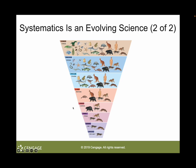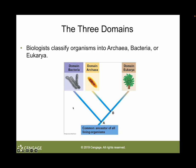Carl Woese of the University of Illinois and his colleagues began to study evolutionary relationships among organisms by analyzing genes coding for ribosomal RNA using sequence analysis. He used the variations in this universal molecule to challenge long-held views that all prokaryotes were closely related and very similar to one another. He showed that there were two fundamentally different groups of prokaryotes — archaea and bacteria — and proposed that archaea are genealogically more closely related to the eukaryotes than they are to bacteria.